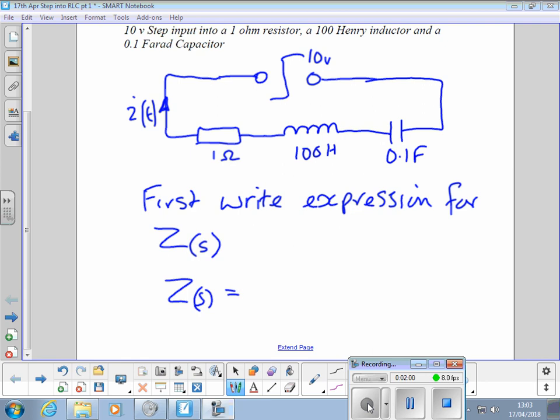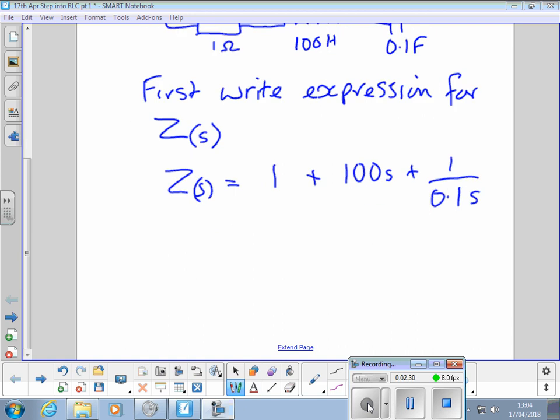When we move a resistor into the S domain, what do we do? Just 1, isn't it? Plus the inductor, multiply it by S, plus the capacitor, 1 over 0.1 S. So that's the first stage.